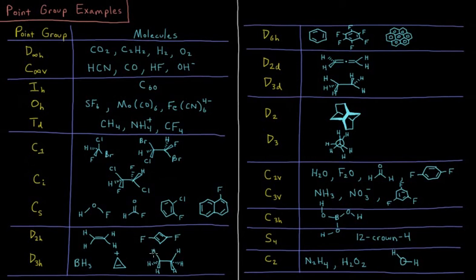Then something like eclipsed ethane, where these hydrogens are all directly across from one another. You have a sigma H there relative to the C3.